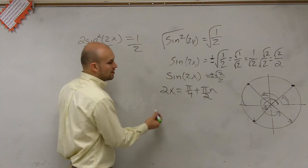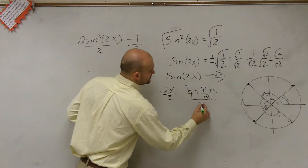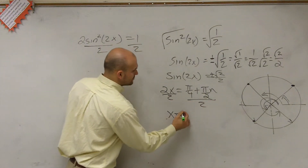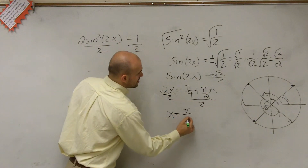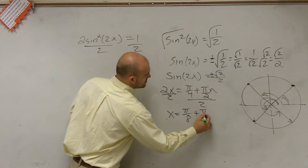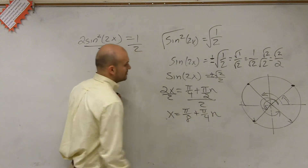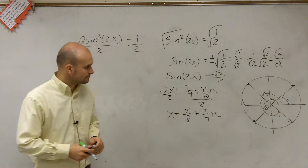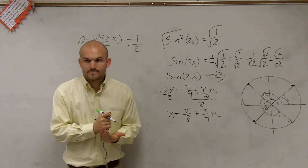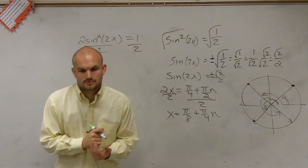Now we need to solve for x, so you divide by 2. Therefore, x equals pi over 8 plus pi over 4 times n. And that would be your final solution.